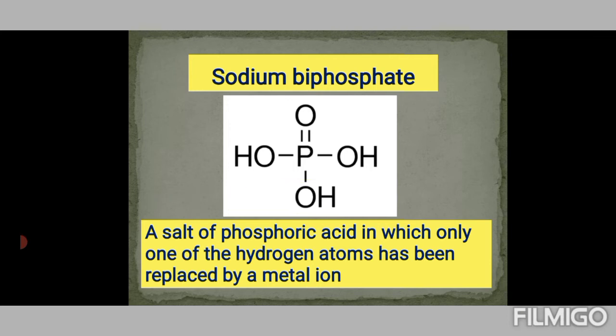When a hydrogen atom is replaced by a metal ion such as sodium, potassium, or calcium, it forms a salt of phosphoric acid — that is biphosphate. This is absolutely not to be confused with bisphosphate. There is actually an ambiguity due to inconsistency in chemical nomenclature of biphosphate over time.